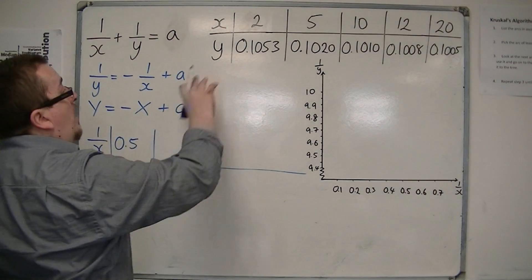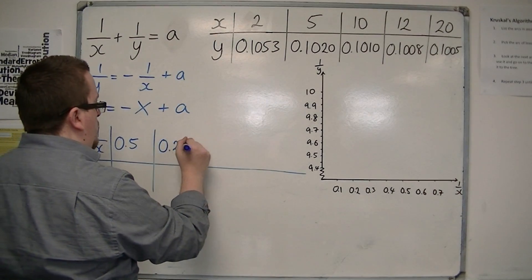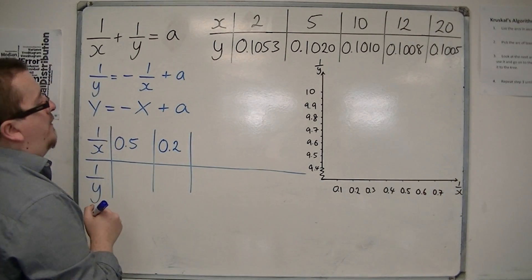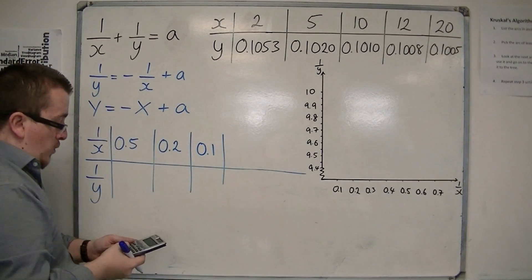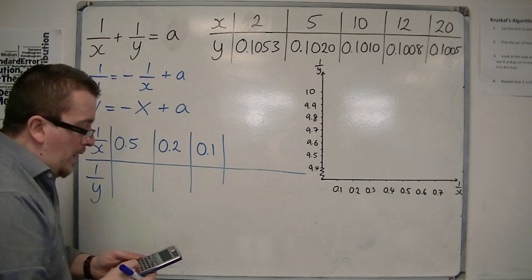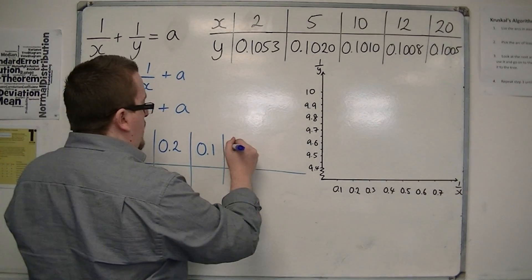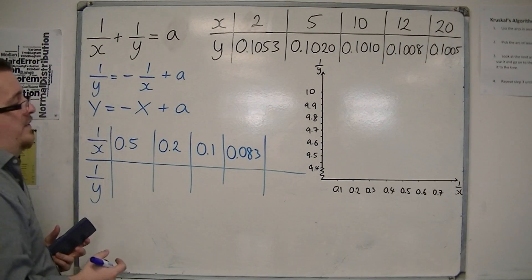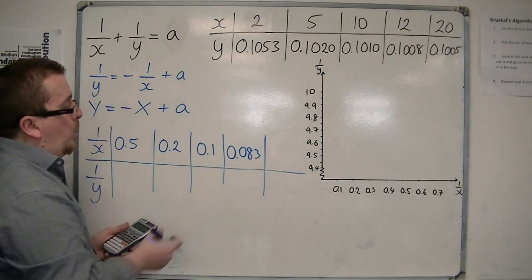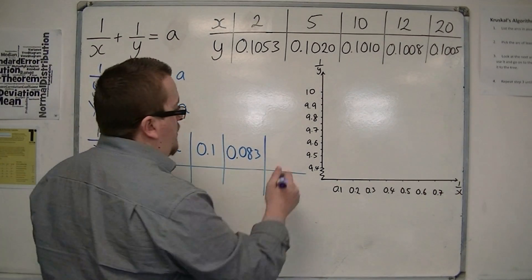Try to fit it in. 1 over 5 is 0.2, then I'm going to have 1 over 10, so 0.1, then 1 over 12, which is 0.083. I'll go to three decimal places there, and 1 over 20 is 0.05.